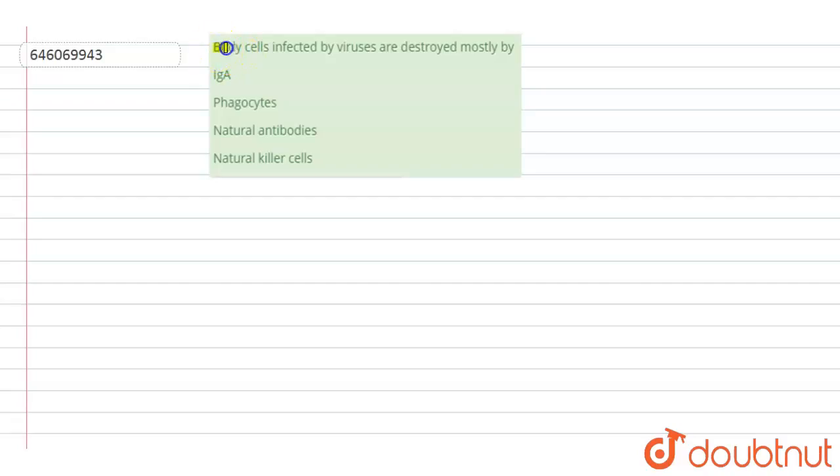The question is: Body cells infected by viruses are destroyed mostly by - the options are Immunoglobulin A, Phagocytes, Natural Antibodies, and Natural Killer Cells.